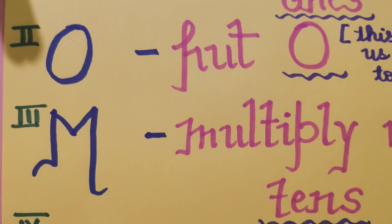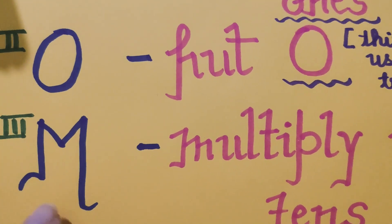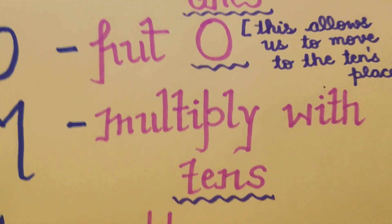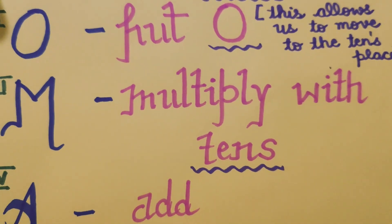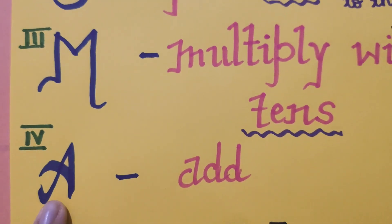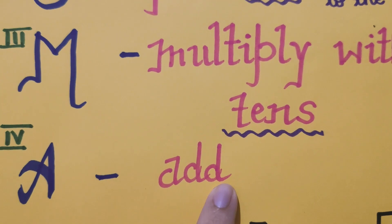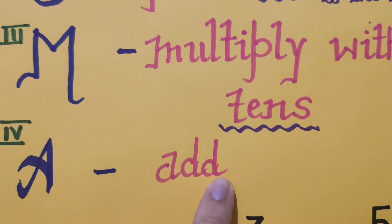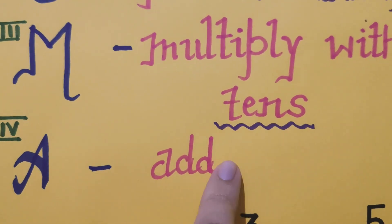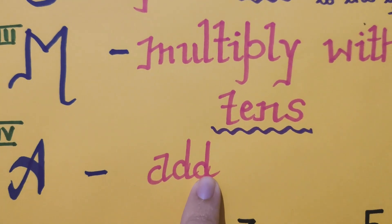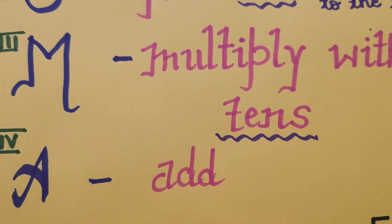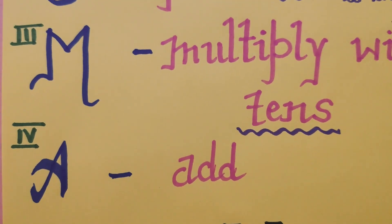Now the third step is M again, which is multiply with tens. And the last step, the fourth step, is A — yes, A for add. You will better understand this with the help of an example, so let's go to the example children.